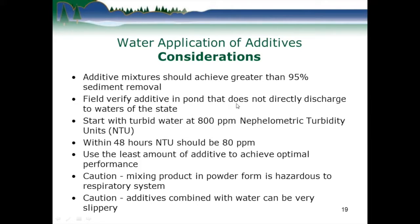Considerations for the water applied product, straight from 1051: the product should achieve 95 percent sediment removal and verify that the additive in the pond is not directly discharged to waters of the state. One way to test the product is with turbid water at 800 NTU, and within 48 hours that turbidity should drop to around 80 NTU. Use the least amount of additive to achieve optimal performance. Caution mixing the product in the breathing zone for respiratory concerns — it can also be slippery.